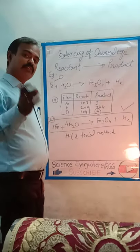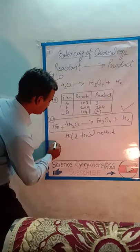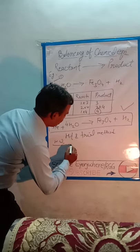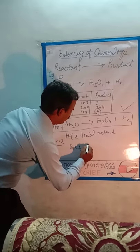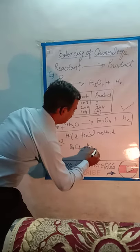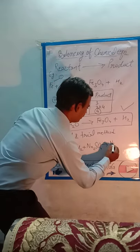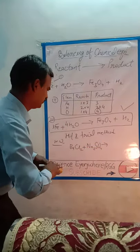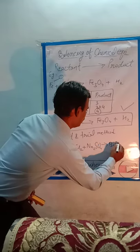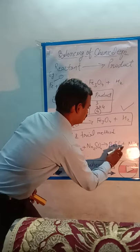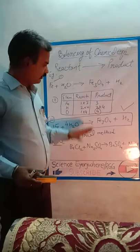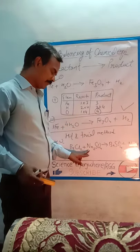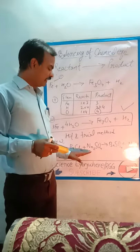I am giving you some more examples as homework. One example: barium chloride plus Na₂SO₄ gives BaSO₄ plus NaCl. By following these steps, you have to balance this chemical equation yourself.